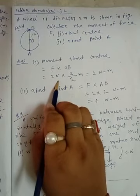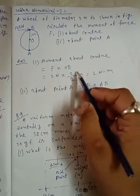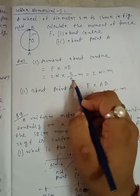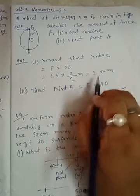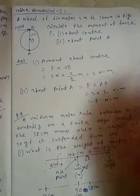F is 2 Newton and OB will be its radius, so 2 divided by 2 meters, which is 1 meter. So 2 Newton-meter will be the answer.